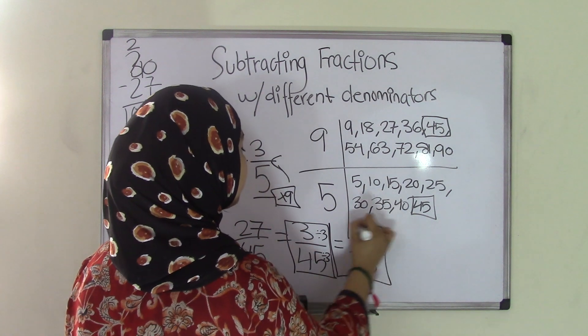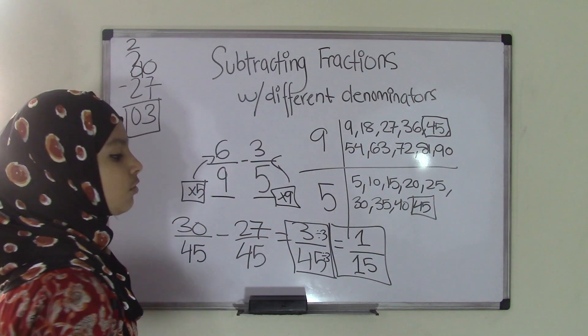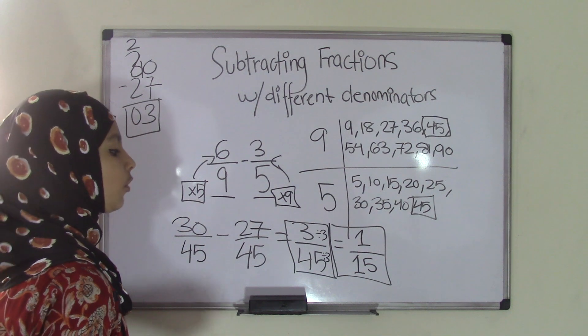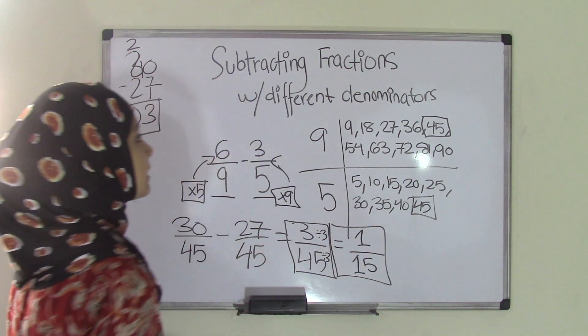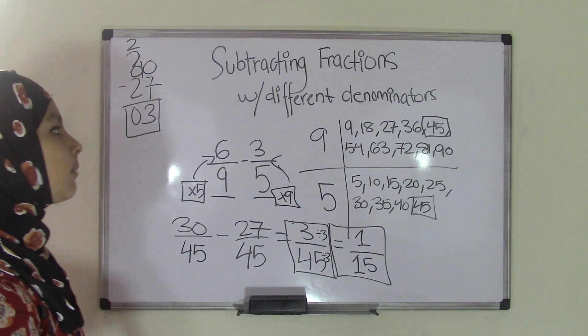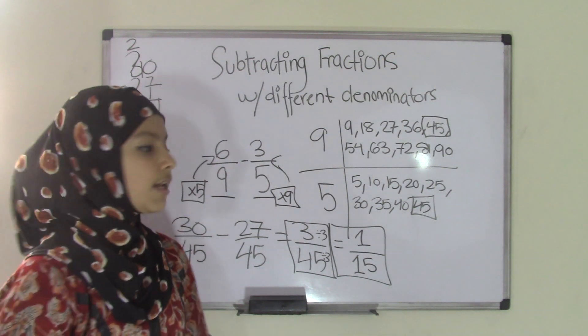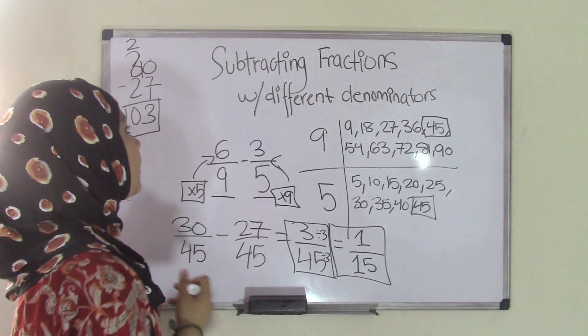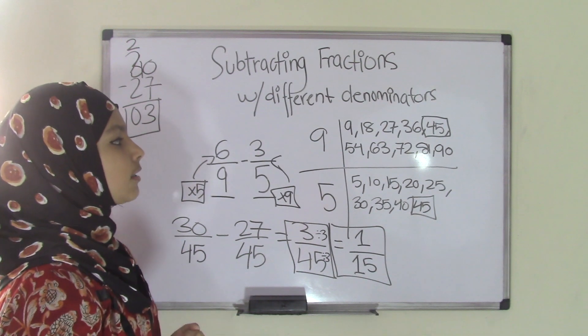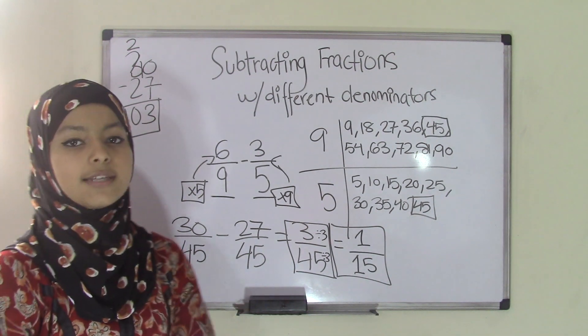So either if it's 3/45 or 1/15, both of them are right answers, but we always use simplified terms. So 1/15 is the correct answer. So that's pretty much it for subtracting fractions with different denominators. Now I hope you guys got this topic. And now, of course, you need to practice some more. You can always visit our website. And we'll see you guys next time.